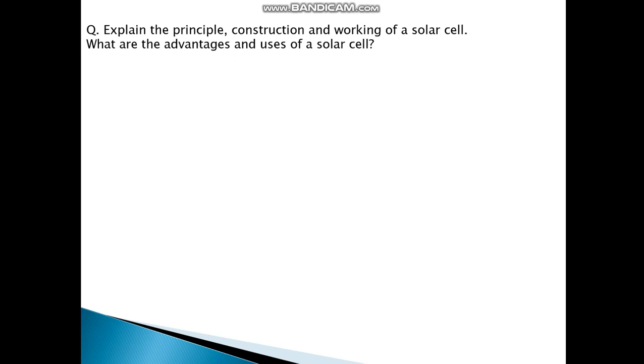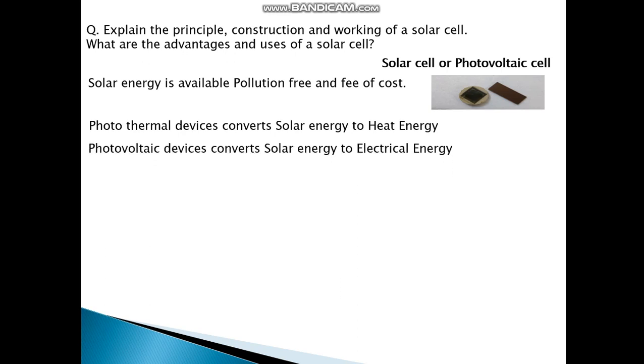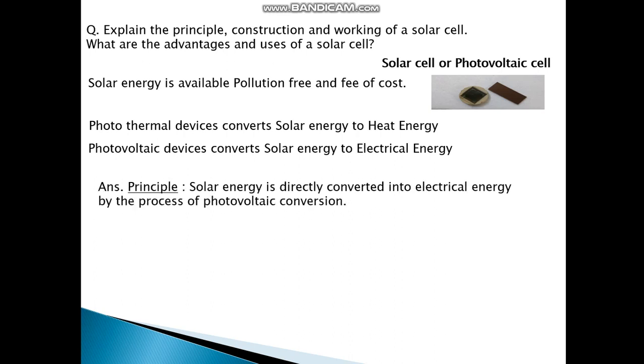Now let's see the principle, construction and working of a solar cell, and see the advantages and uses of a solar cell. So solar cells are also photovoltaic cells. Solar energy is available pollution free and free of cost. Photothermal devices convert solar energy to heat energy. Photovoltaic devices convert solar energy to electrical energy. The principle of the solar cell: solar energy is directly converted to electrical energy by the process of photovoltaic conversion which we have discussed earlier.